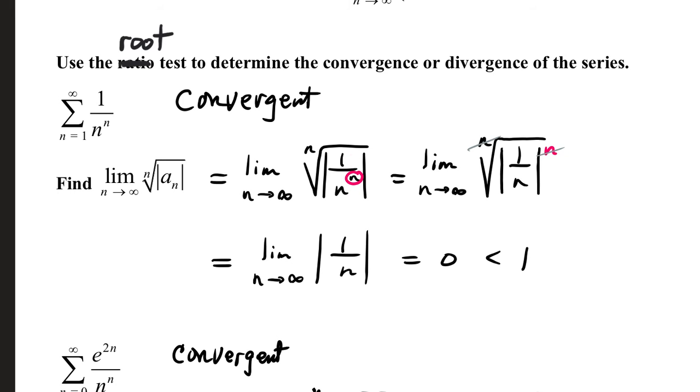Because 1 to the n is still 1, I'm actually going to write it as 1 fraction to the nth power. Well, that nth root and nth power will cancel one another. It's like square rooting a square, or cube rooting a cube.